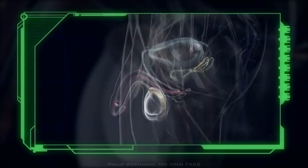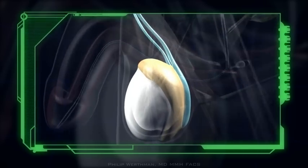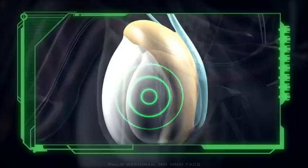The tiny incision is closed with dissolving stitches and a band-aid. Sometimes the sperm from the epididymis are not very good quality, in which case they are removed directly from the testicle through the same small incision.